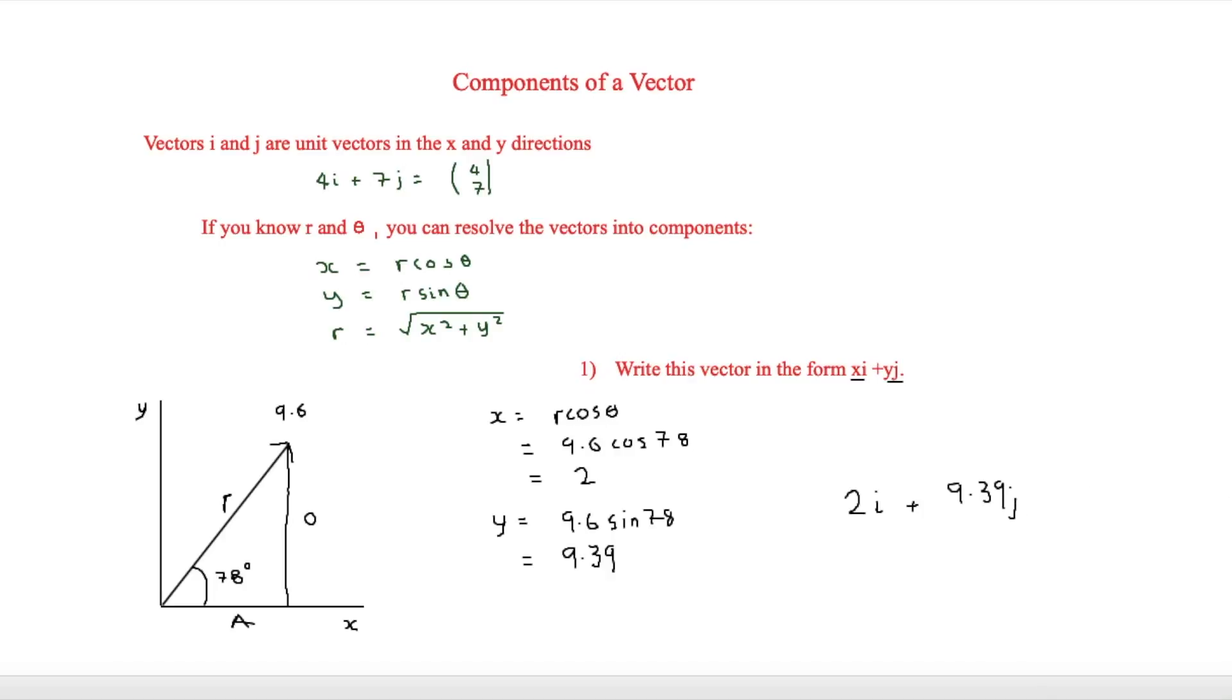If we are wanting to write it in another form, we could have it like 2 here and then 9.39. But the question does specifically ask for it in the form xi plus yj. And we found out what x is and we found out what y is.